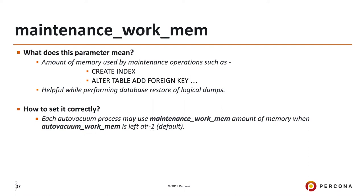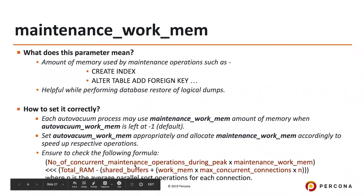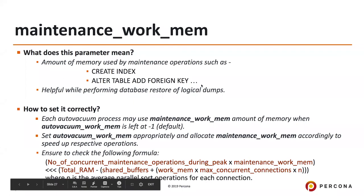When autovacuum_work_mem is set to -1, it automatically defaults to maintenance_work_mem. So you need to set both appropriately. Also: number of concurrent maintenance operations during peak times × maintenance_work_mem should be much less than total RAM minus shared_buffers minus (work_mem × max_concurrent_connections × N), where N is the average number of parallel sort operations per connection.